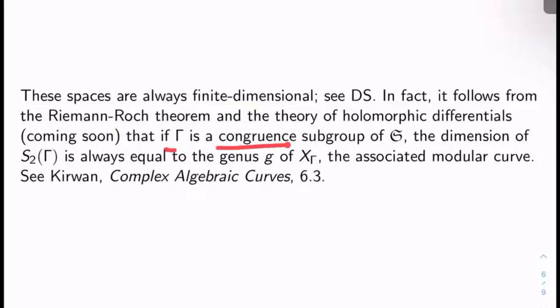That if Γ is a congruence subgroup of SL_2(Z), then the dimension of S_2(Γ), so we can actually get a hold of this specific dimension of S_2(Γ) in a nice elegant way, and by the way, this space here is the space that is of primary concern. If you recall the proof of Fermat's last theorem, we're concerned mostly with weight two cusp forms. Anyway, the dimension of this space is always equal just to the genus g of the associated modular curve X_Γ, and again, modular curves we'll be discussing soon. If you want a reference for this, Kirwan Complex Algebraic Curves 6.3 covers it. I think it's covered in a variety of places though.